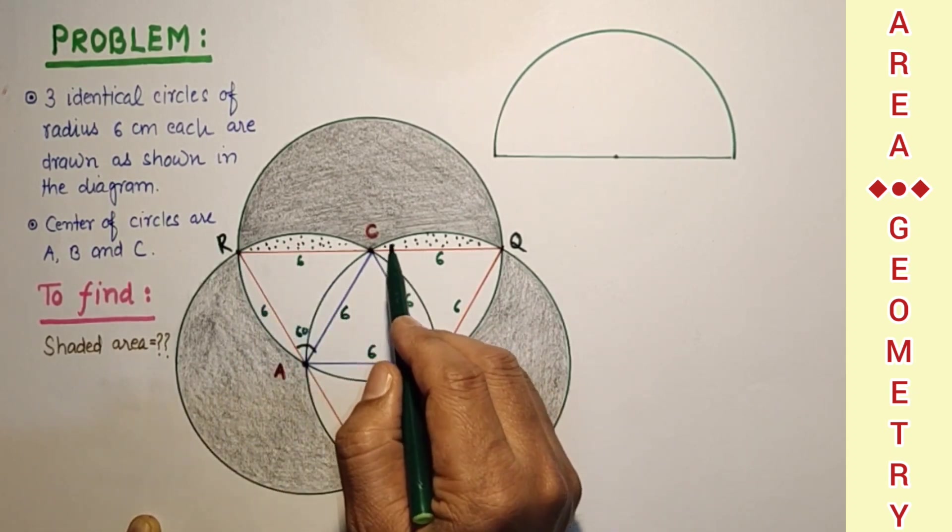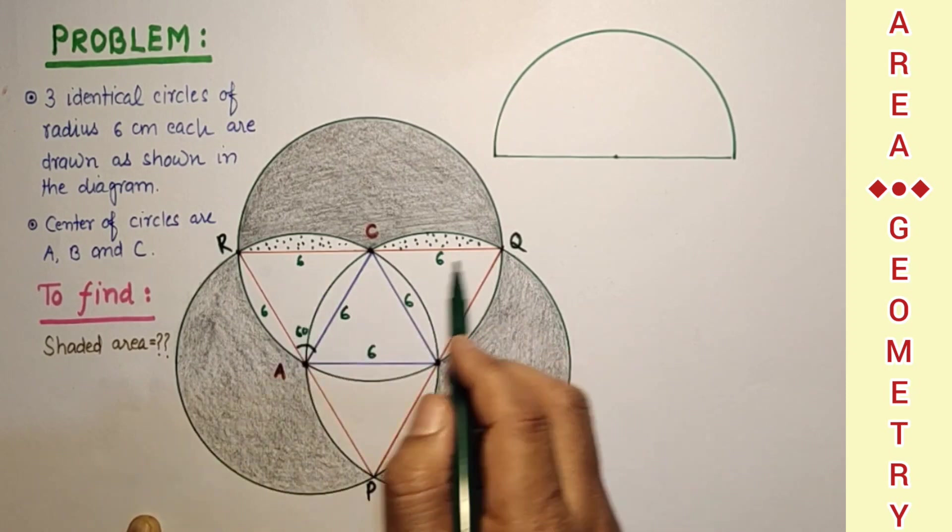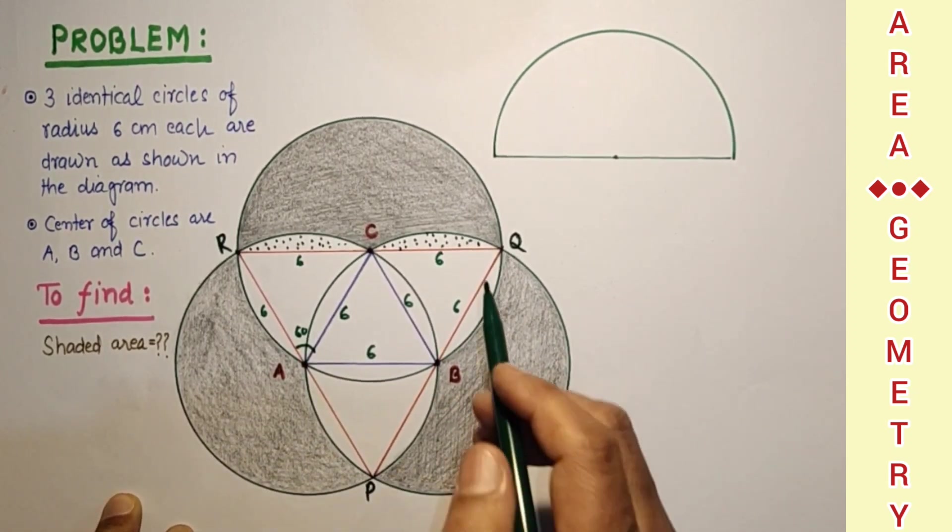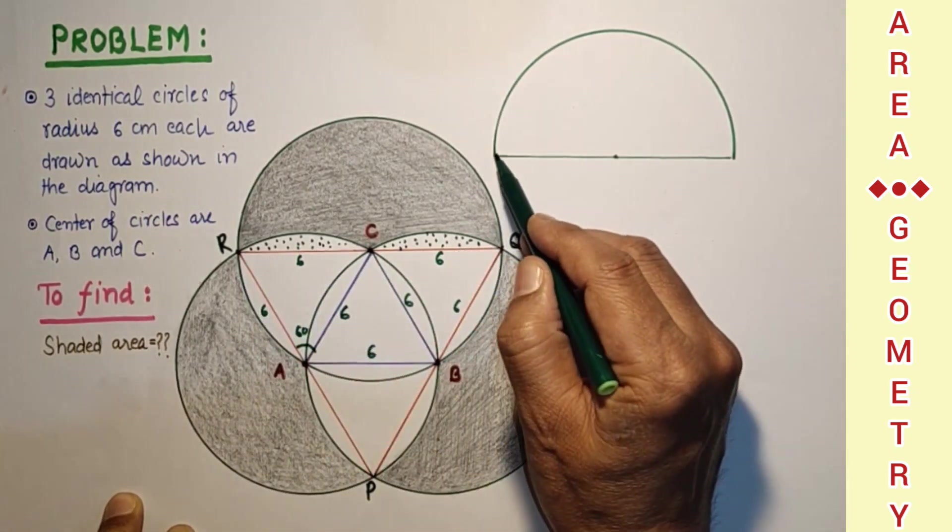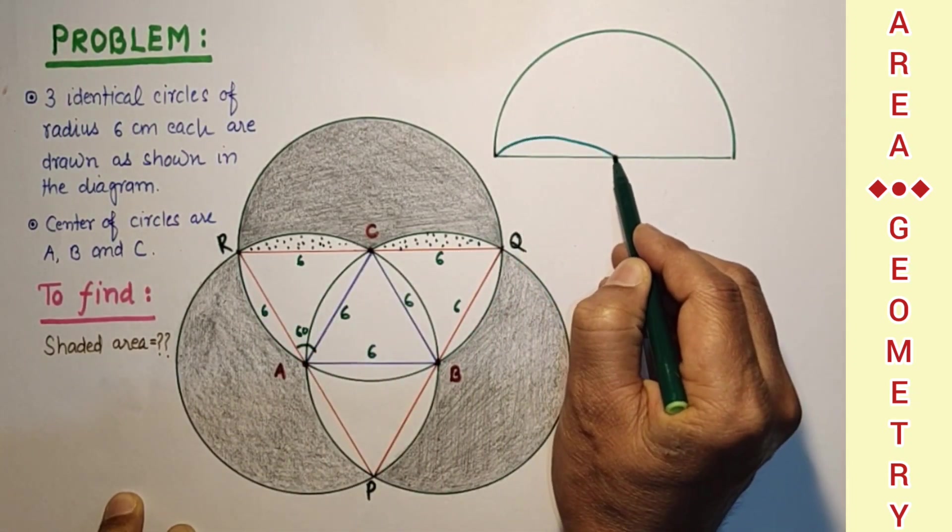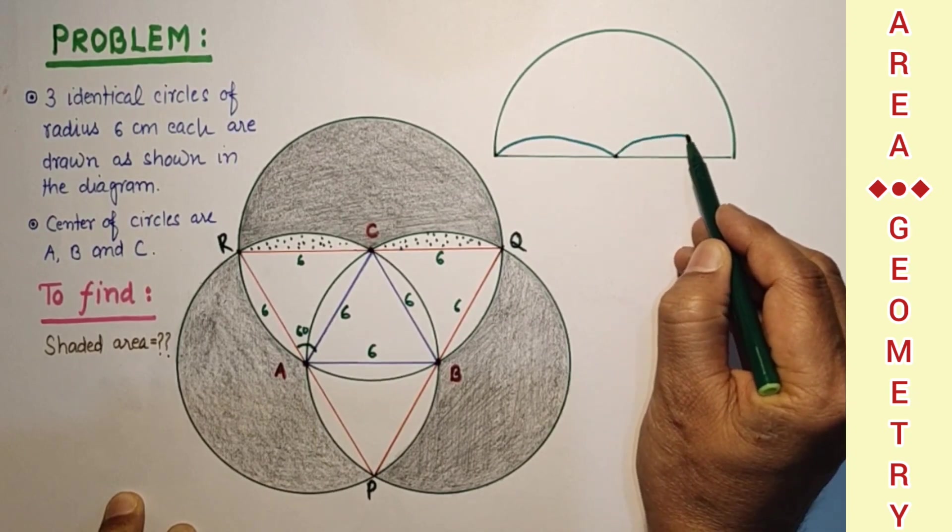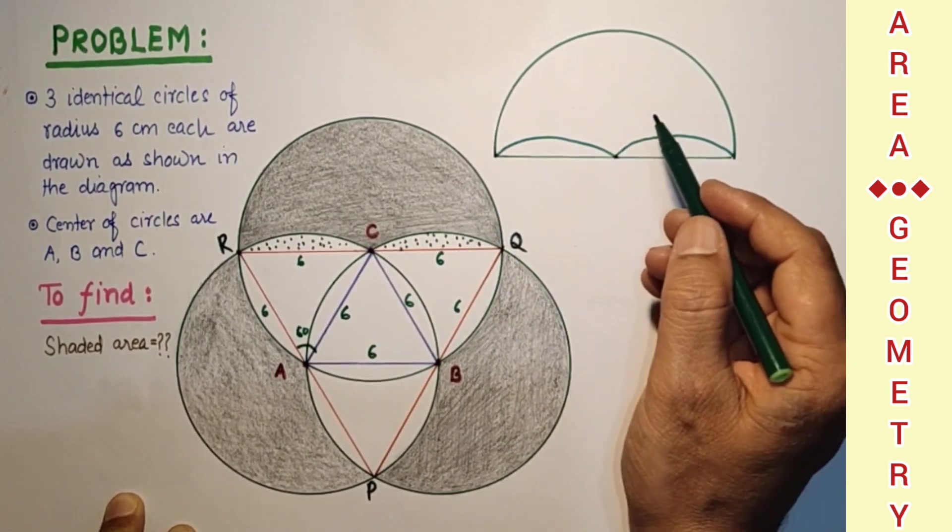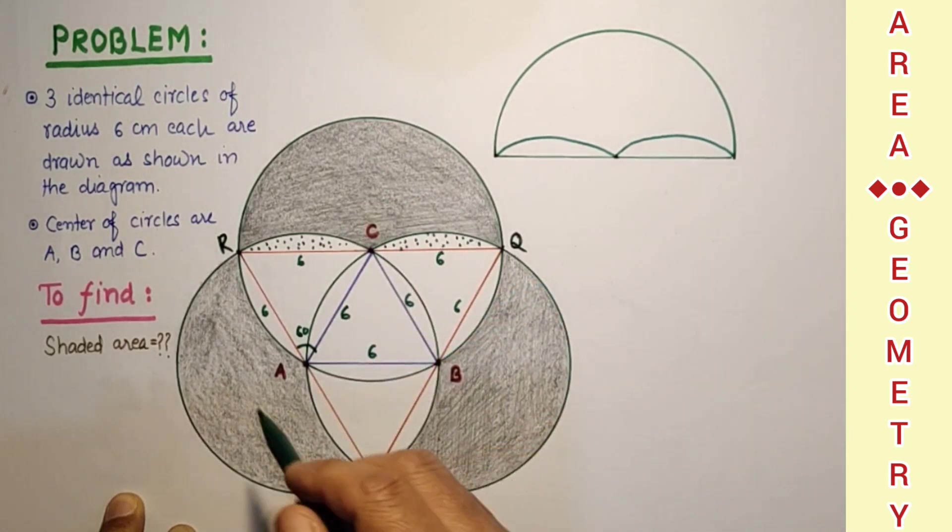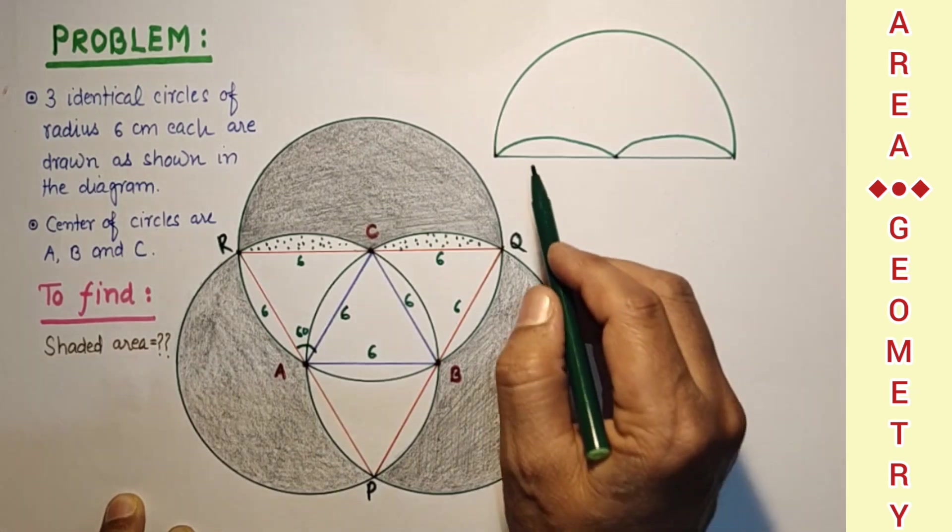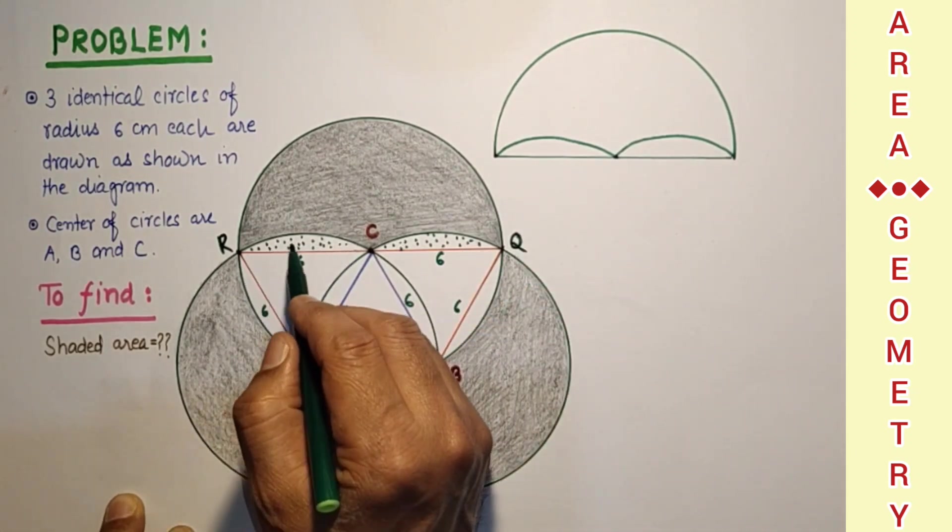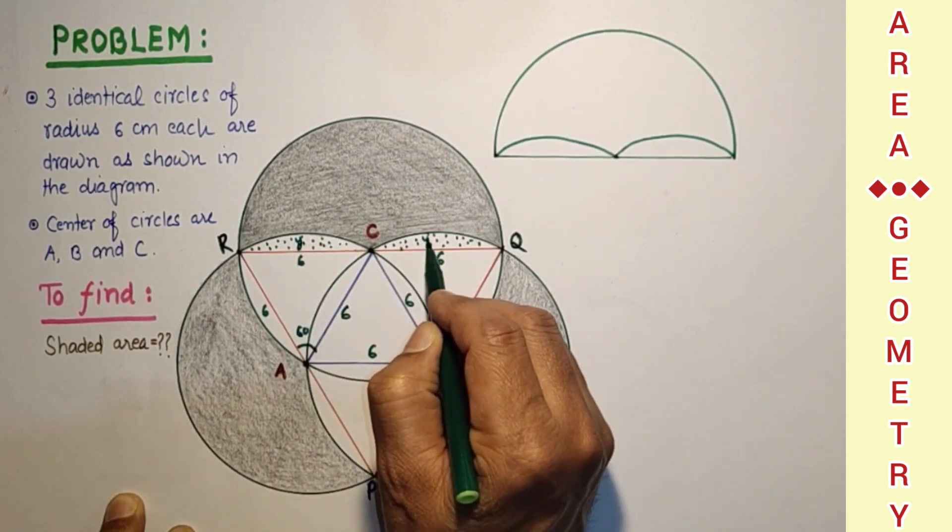These two segments are identically equal. So if we find this area and subtract like this, then we will get this shaded part. And then if we multiply by 3, we will get the whole shaded area required. So to get this segment area, let us suppose this is y. So this will also be y.